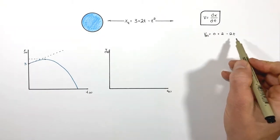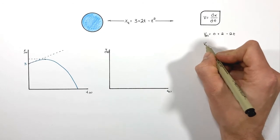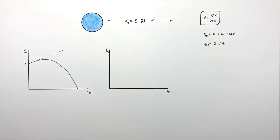So now we have the velocity as a function of time, or if I clean this up it'll look like 2 minus 2t.